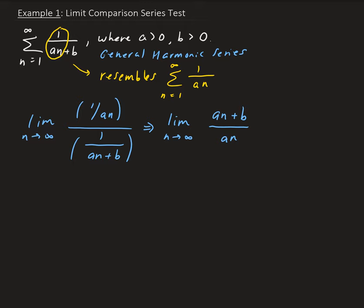Taking the limit of this as n goes to infinity: in terms of n, the degree in the numerator is one, and the degree in the denominator is one. So therefore the limit of this is going to approach one.